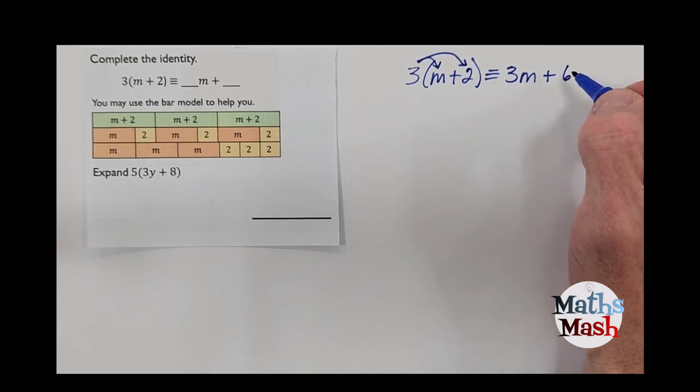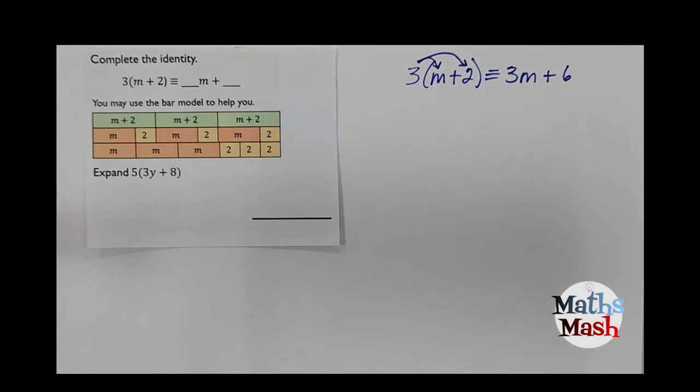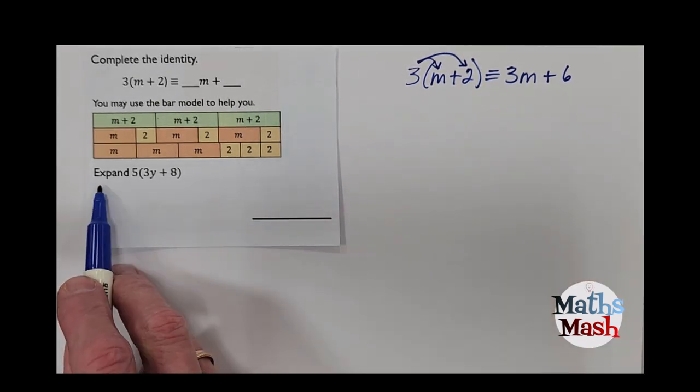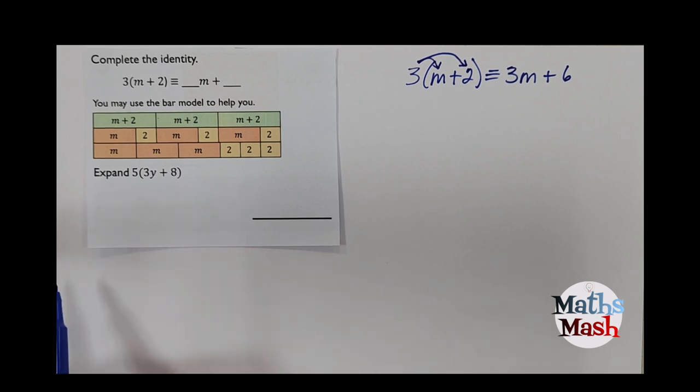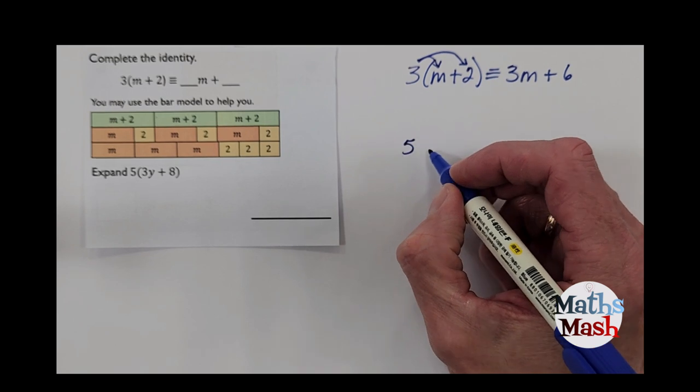Now let's have a look at the next one. It says expand 5 bracket 3y plus 8.